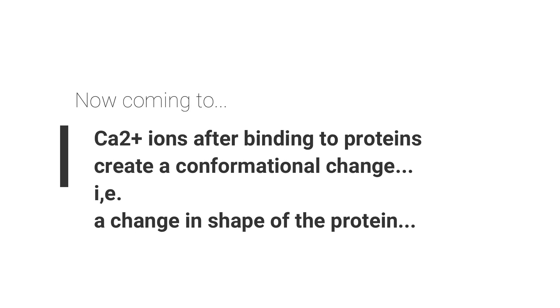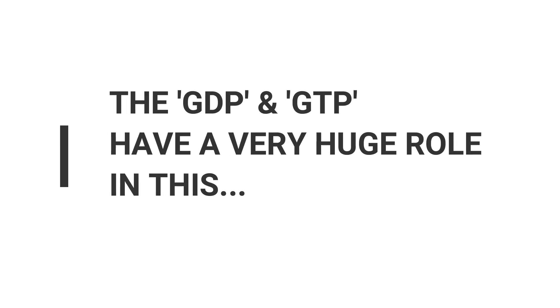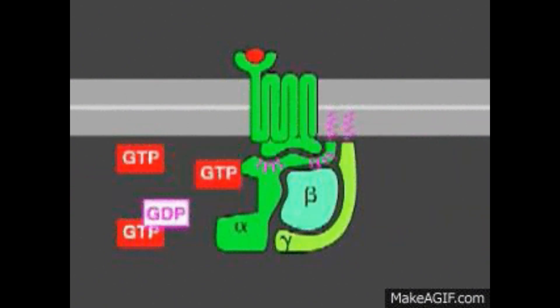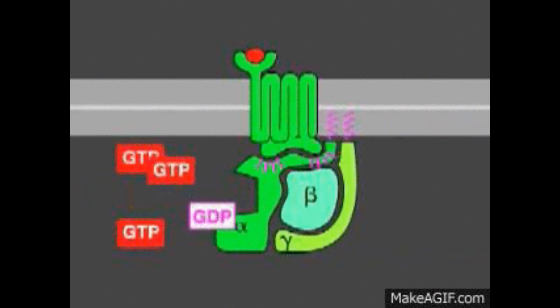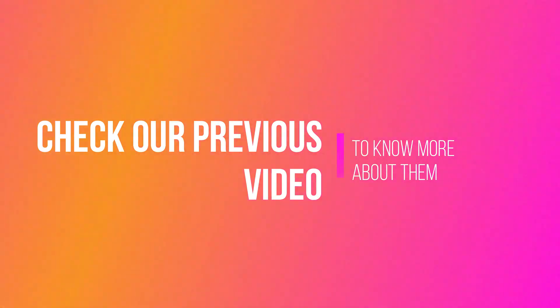A very important conformational change that calcium helps in is the main responsible factor that allows a lot of proteins to function the way they are supposed to. The GDP and GTP have a very significant role in this second messenger system, and if you want to know more about them, you can check the other video.